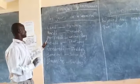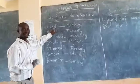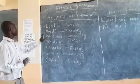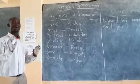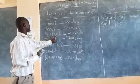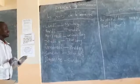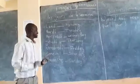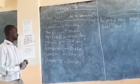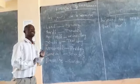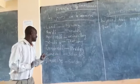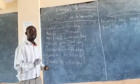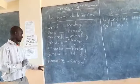Le premier jour de la semaine c'est lundi. Lundi. Mardi. Mercredi. Jeudi. Vendredi. Samedi. Dimanche.